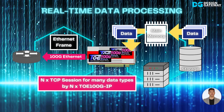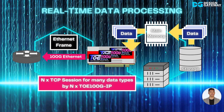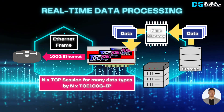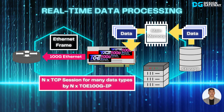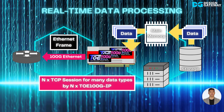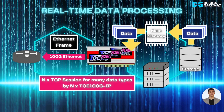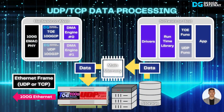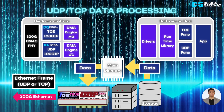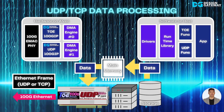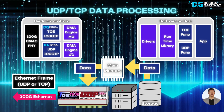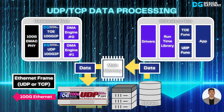One TOE100G IP is designed to handle one TCP session data. When multiple TCP sessions are required for transferring many data types, multiple TOE100G IPs and DMA engines can be integrated into the accelerator system. When the accelerator system needs to support both TCP/IP and UDP/IP protocols, the UDP100G IP can also be integrated and work together with TOE100G IP.